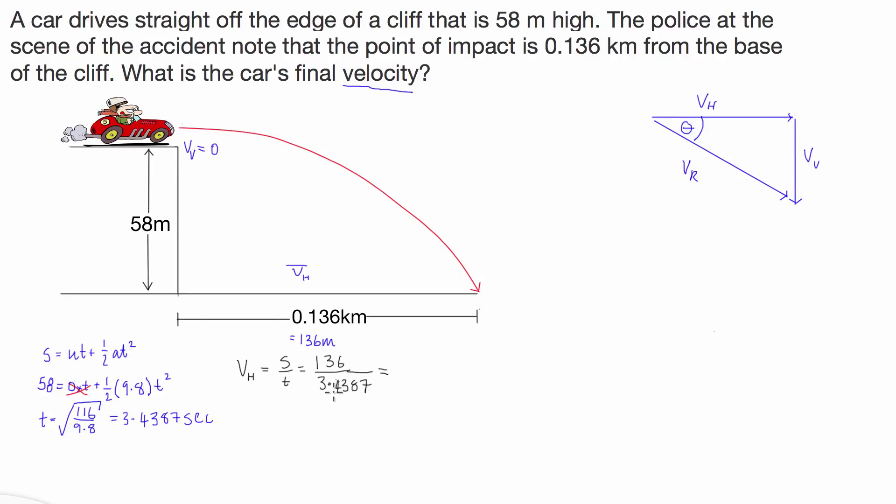Which is equal to 136 divided by 3.4387, and from that we get 39.55 meters per second. We can put that into our little final velocity triangle here. So this is going to be 39.55 meters per second. Great.